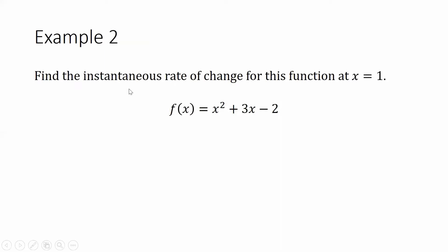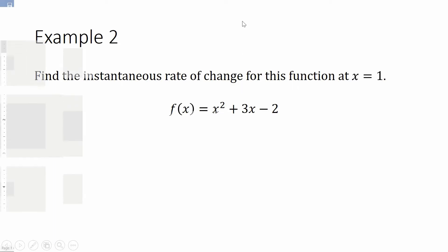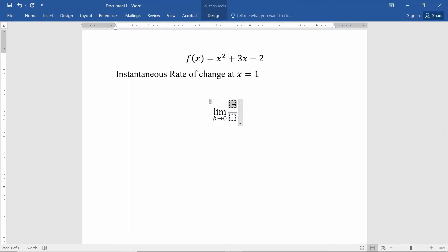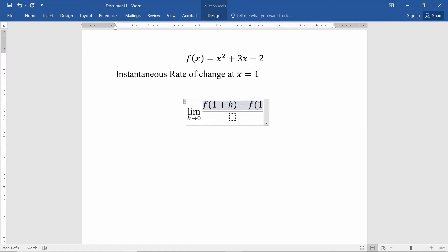Let's look at an example. We have the function f(x) we've dealt with before, and we've looked at x equals one and x equals three. Let's find the instantaneous rate of change at x equals one. The function is x squared plus three x minus two. By the definition, I take the limit of the difference quotient as h goes to zero: that's f(1 + h) minus f(1), divided by h.